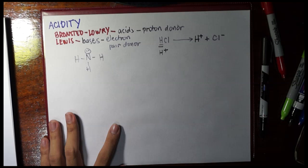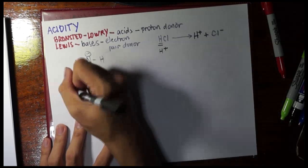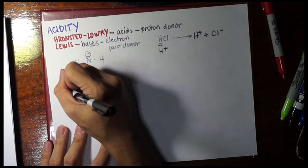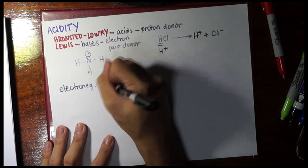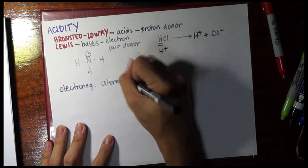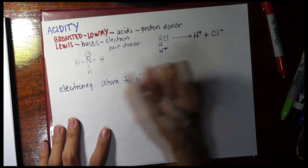Now, how do we talk about, or how do we see the acidity of a certain organic compound? Well, a general condition is that there should be an electronegative atom to give a proton. For example, let's have a carboxylic acid. Let's have acetic acid again.